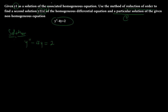We are told that y1 is a solution of the associated homogeneous differential equation. The y1 given is e to the power negative 2x. So e^(-2x) is the solution of the associated homogeneous equation y'' minus 4y equals zero.